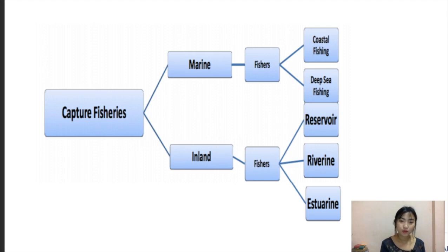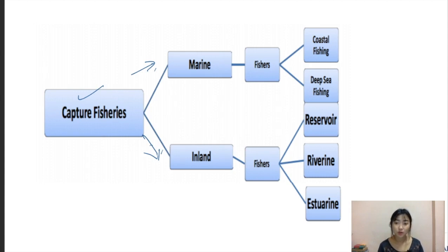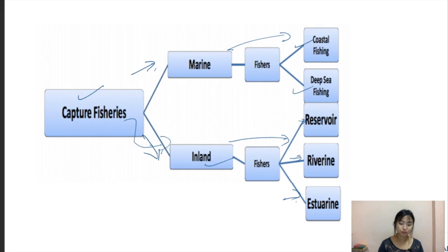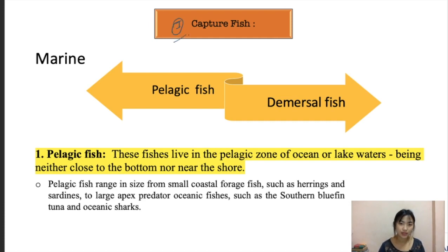Capture fishes can be divided into marine and inland. Marine deals mostly with the marine environment, while inland includes lakes, reservoirs, and ponds. Marine can further be divided into coastal fishing and deep sea fishing. Inland capture fishes can be further divided into reservoir, riverine, and estuarine. Inland fishes are mostly used for culturing and capturing of fishes.